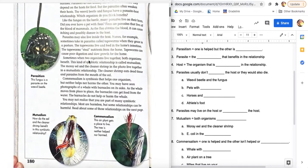A tick sucking your blood, harm to you, benefit for them. Parasitism. Let's go back to the next one. Sometimes when two organisms live together, both organisms benefit. This kind of symbiotic relationship is called mutualism. I would like to see it in yellow guys, but it's not. So mutualism, both organisms benefit.